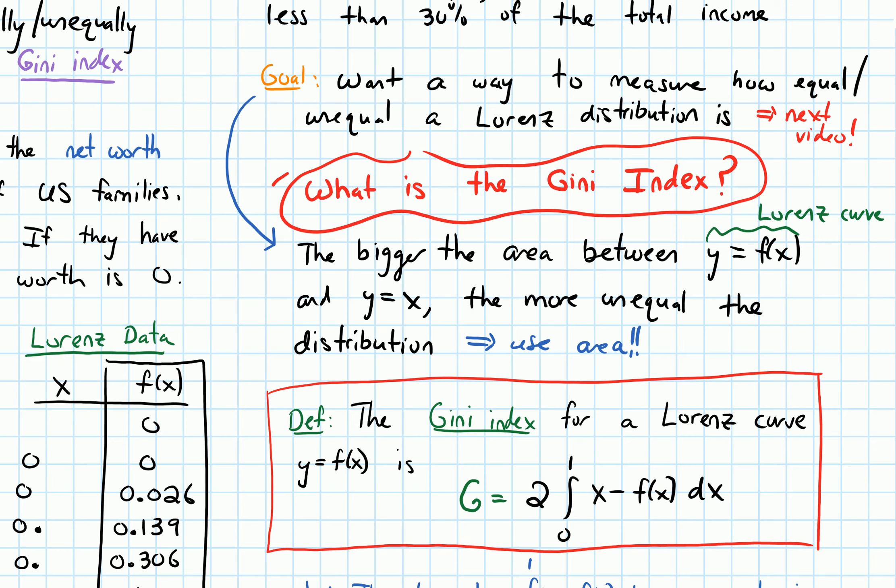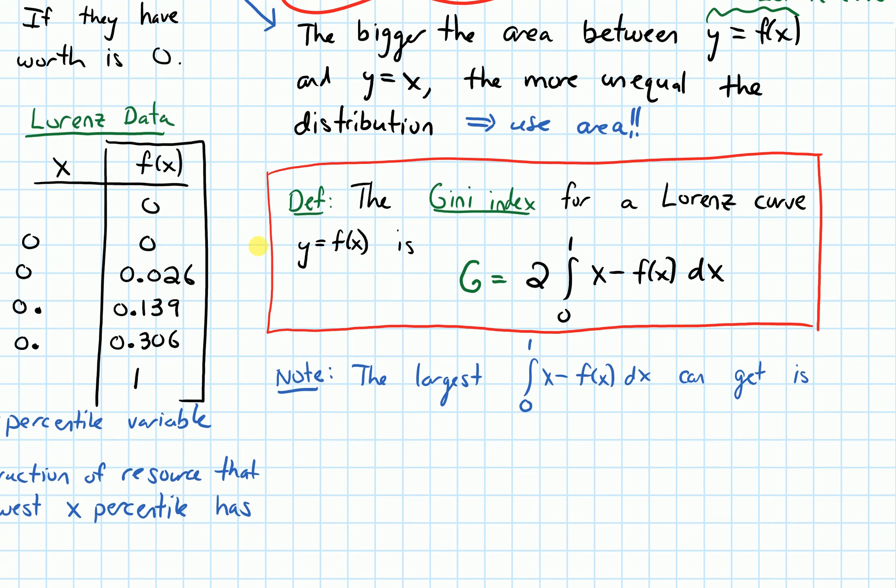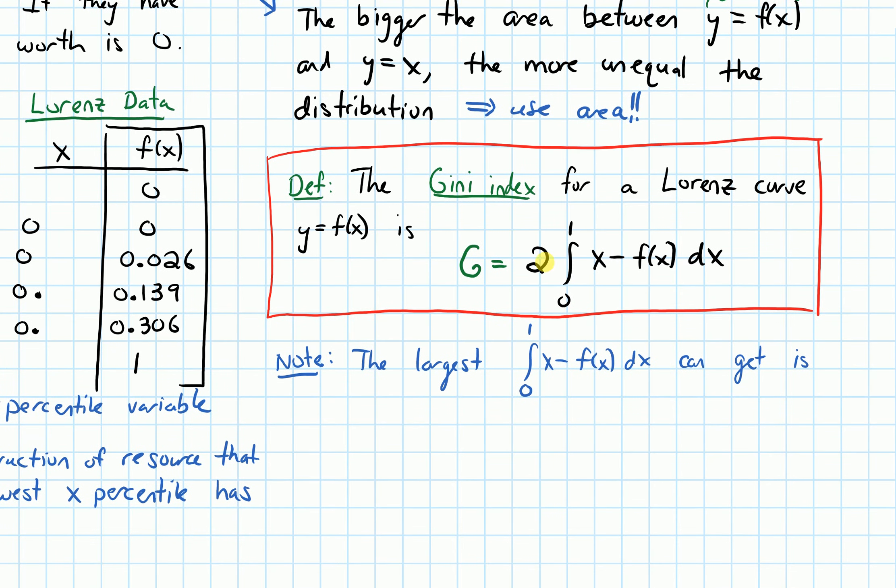In other words, we're finding the area between the curve of perfect equity (that's x) and our Lorenz curve f(x) over the interval from zero to one, and then we're multiplying it by two for some reason, which I'm about to explain. Why do we multiply this thing by two?